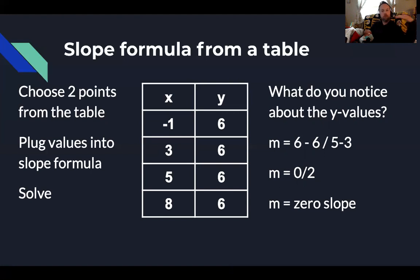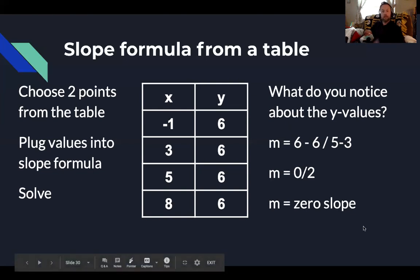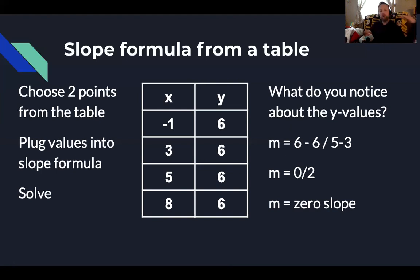I chose 3, 6 and 5, 6 as my two points. My change in Y is 6 minus 6; my change in X is 5 minus 3, which gives me 0 over 2. This is a zero slope. If my Y-coordinates do not change — if my output doesn't change — there is no change in the slope. This is like if house prices stayed at $200,000 in 2000, 2001, 2002, and 2003: the market was stagnant, the market was flat. When the Y values don't change, graphing that results in a flat horizontal line with zero slope.